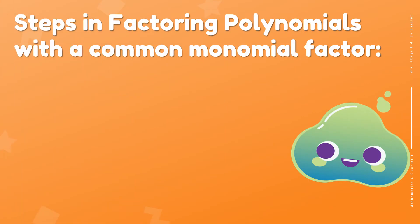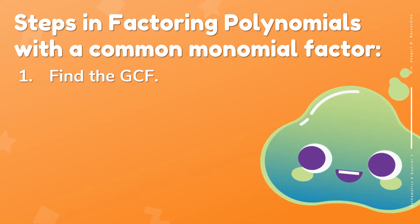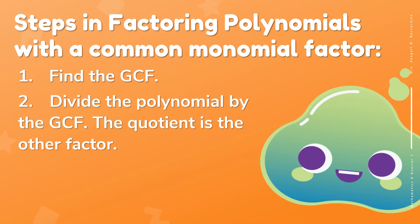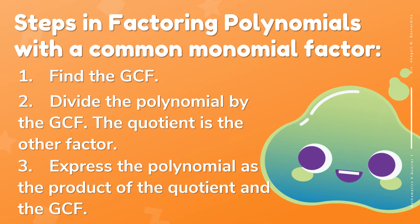Here are the steps in factoring polynomials with a common monomial factor. Step 1: Find the GCF. Step 2: Divide the polynomial by the given GCF — the quotient is the other factor. Step 3: Express the polynomial as the product of the quotient and the GCF.